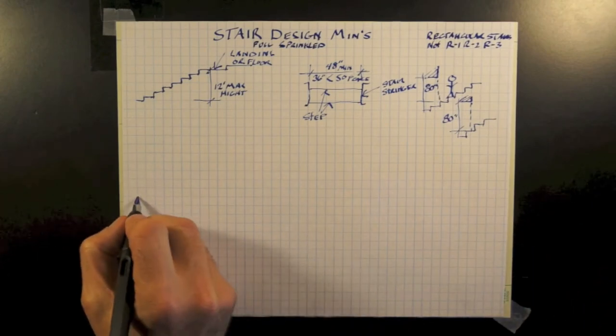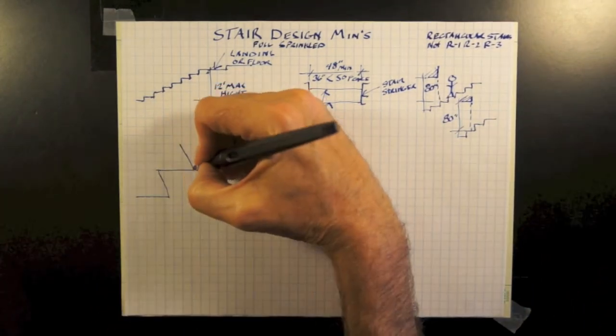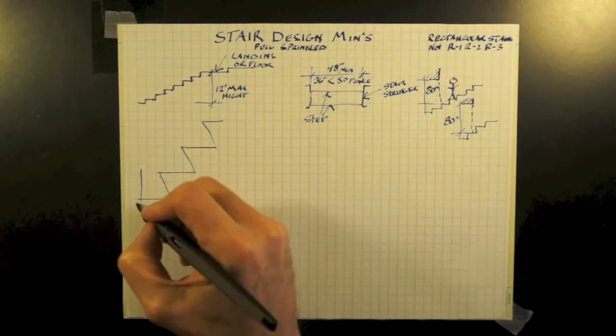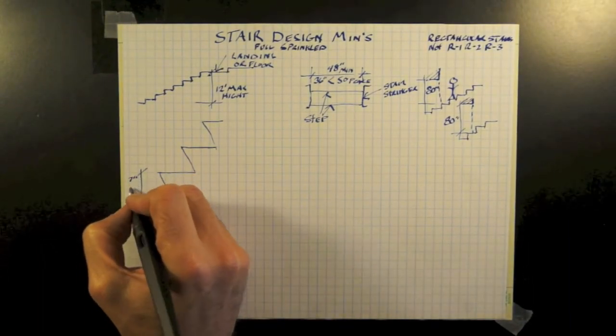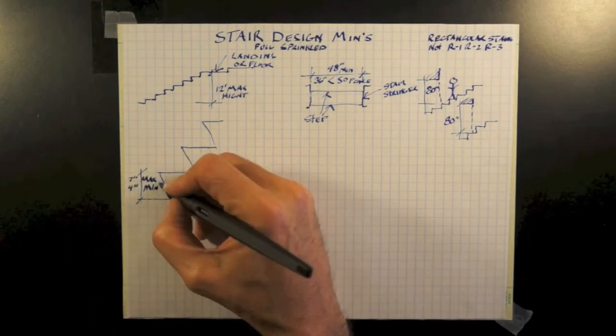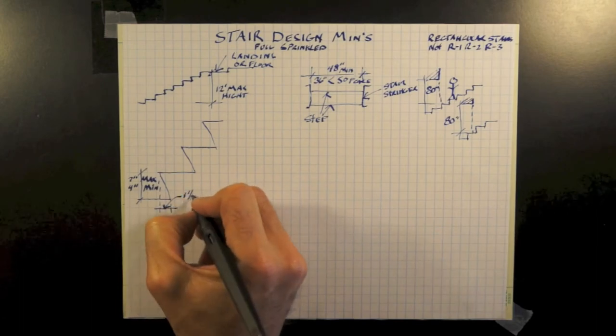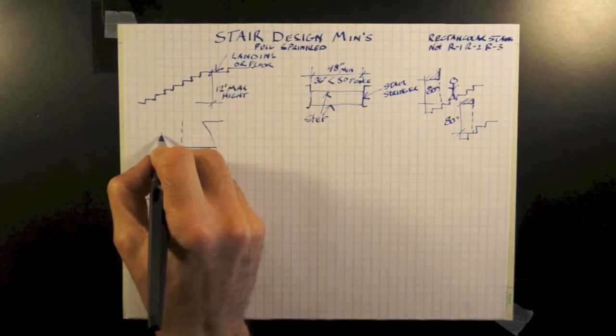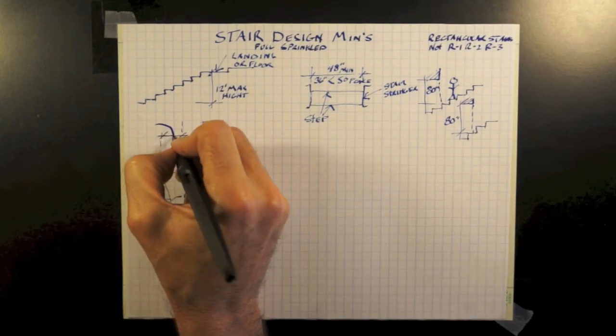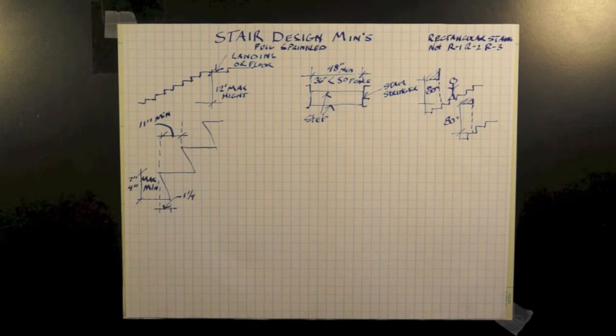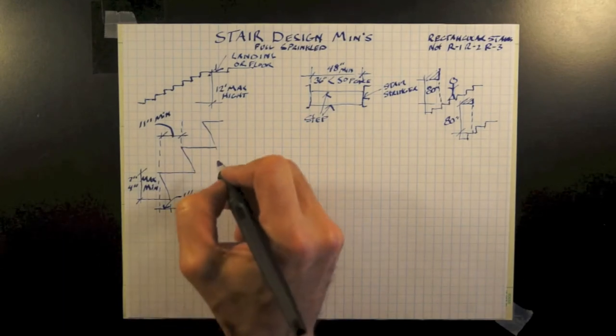Now to understand the actual steps themselves. Our maximum height of any step is 7 inches. The minimum is 4 inches. Every step will have a nosing measuring not greater than 1 1/4 inches. Each step cannot be less than 11 inches. That 11 inches is measured from nosing to nosing, not counting the 1 1/4 inches.